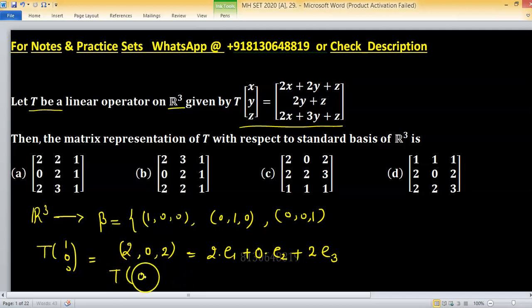Now write image of second element (0,1,0), that will equal (2,2,3) and write in linear combination so 2e₁ plus 2e₂ plus 3e₃.